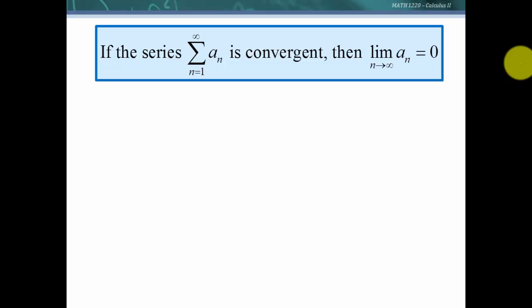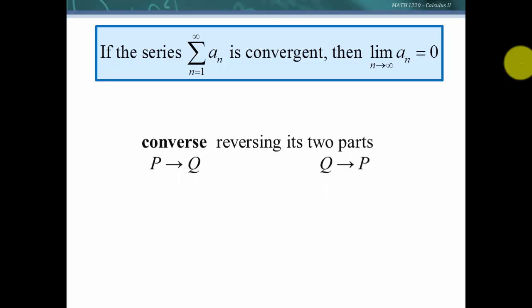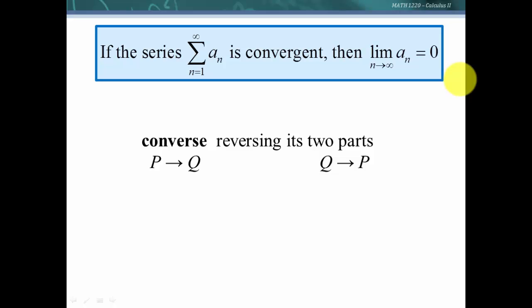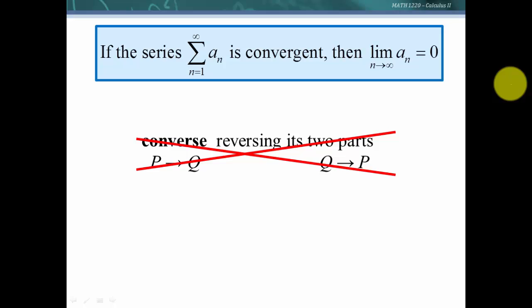Now let's consider a couple of things about this theorem. The converse reverses the two parts: if p then q becomes if q then p. So if we reverse it and say 'if the limit as n→∞ of a_n equals zero, then the series is convergent' — is that true? The answer is no. We saw that with the harmonic series: it diverges, yet the limit as n→∞ of a_n equals zero. So we must be careful not to use this theorem in reverse — the converse is not true.